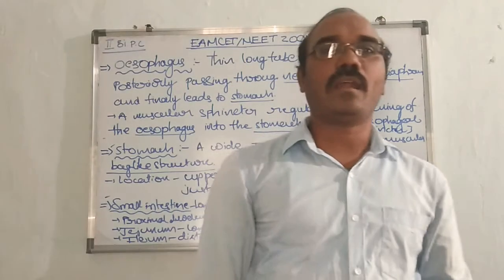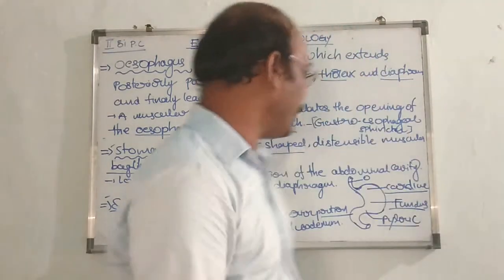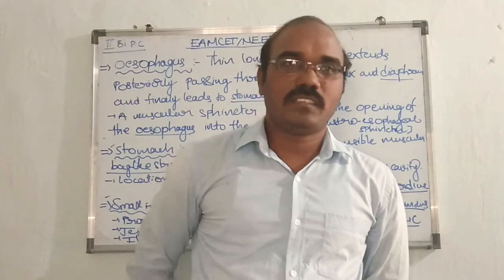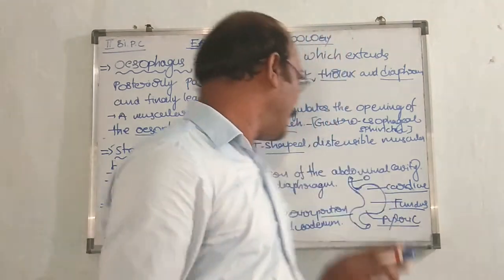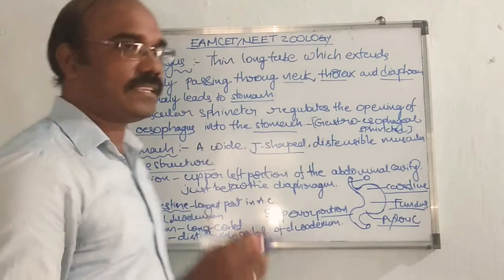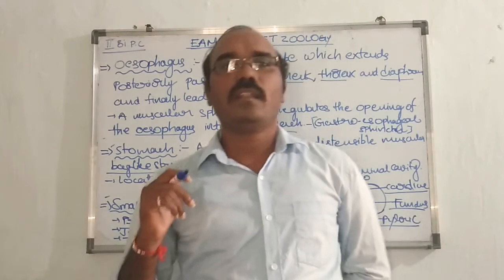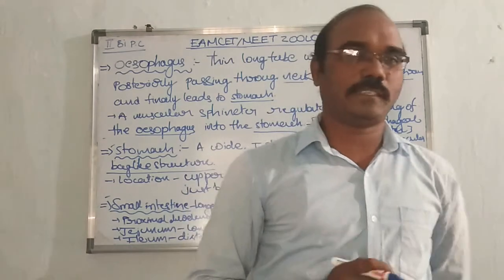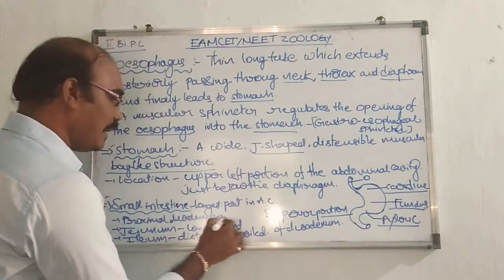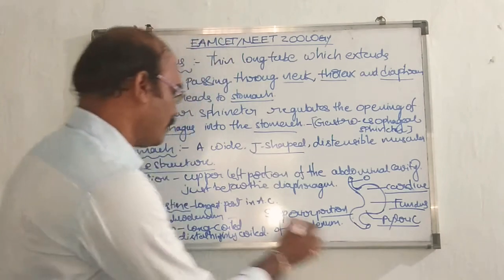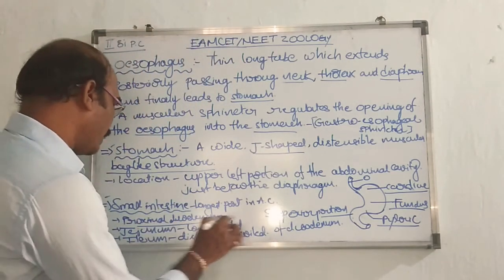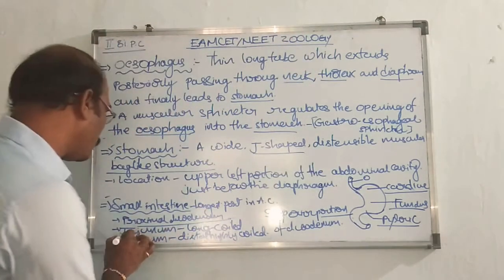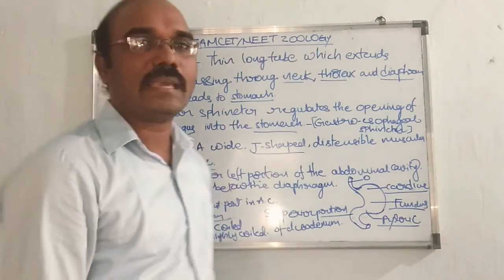Another part of the alimentary canal is the small intestine. This is the longest part of the alimentary canal. The small intestine is divided into three main parts: proximal duodenum, which is the first part; a long coiled jejunum as the second part; and the distal highly coiled ileum as the third part.